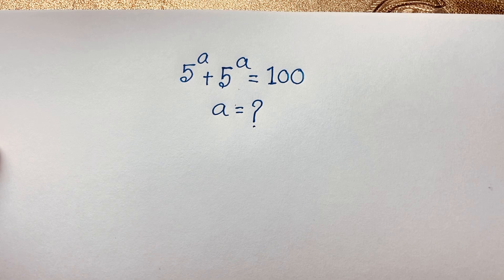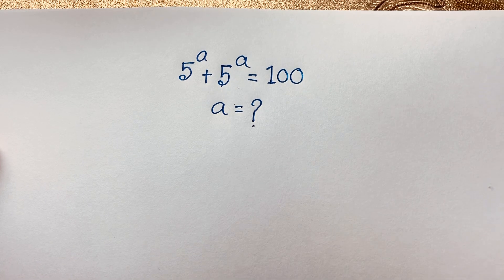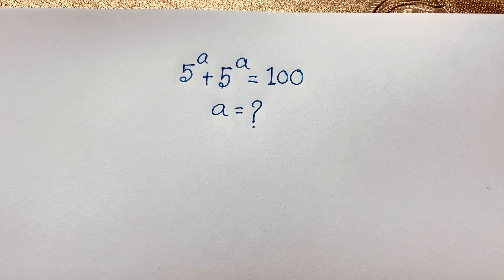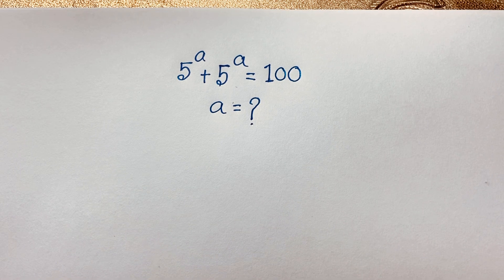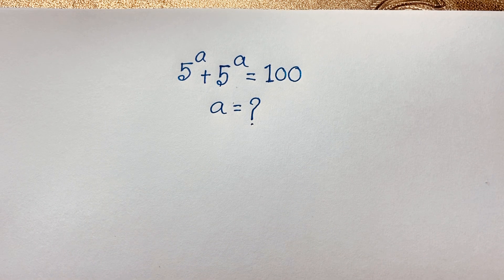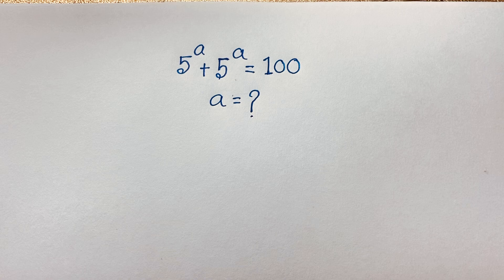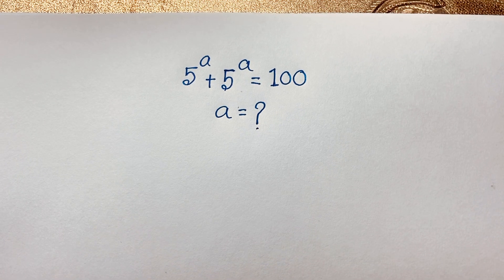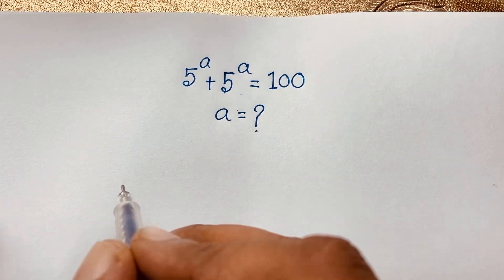Hello everyone. In this video, we have solved a nice Junior Math Olympiad question. 5 to the power a plus 5 to the power a is equal to 100. We are finding out what is the value of a in this exponential expression.